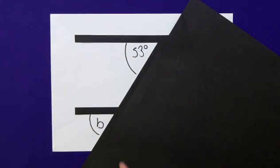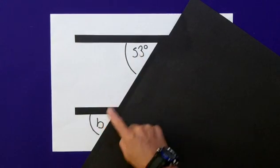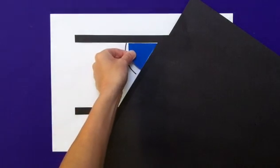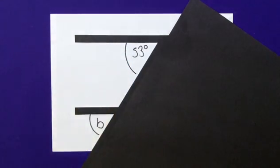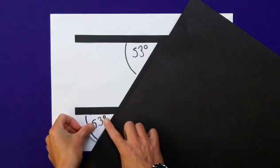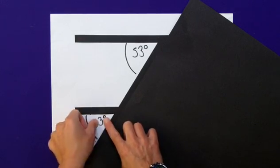This part of the diagram contains two corresponding angles. B corresponds to 53 degrees. They are both equal. So, I can put that on my diagram. B is equal to 53 degrees.